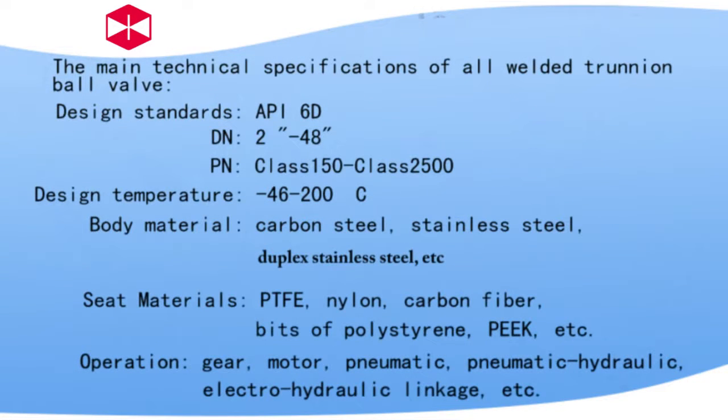The main technical specifications of the all-welded Trunnion ball valve are Design standard API 6D, DN 2 inches to 48 inches, PN class 150 to class 2500. Design temperature minus 46 to 200 degrees Celsius. Body material carbon steel, stainless steel, duplex stainless steel.